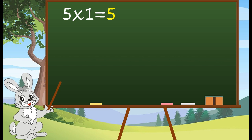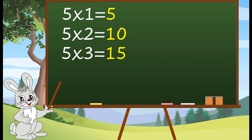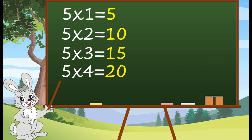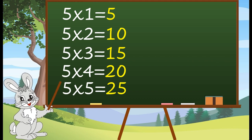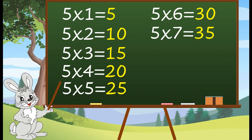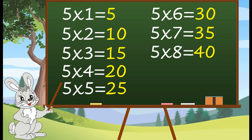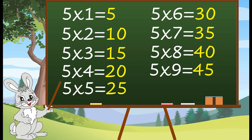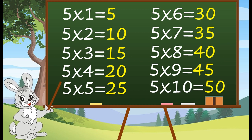5 1's are 5. 5 2's are 10. 5 3's are 15. 5 4's are 20. 5 5's are 25. 5 6's are 30. 5 7's are 35. 5 8's are 40. 5 9's are 45. 5 10's are 50.